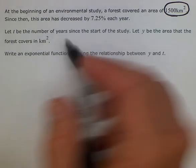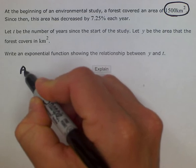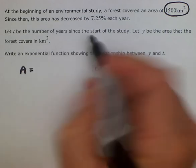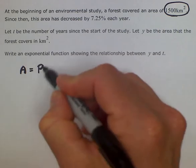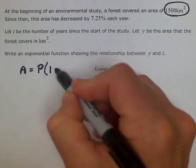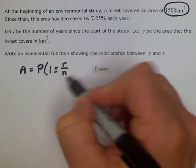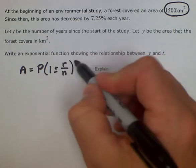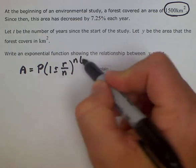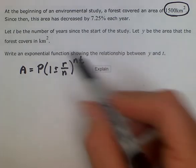So we will use the compound interest formula which looks like this. Amount is equal to our initial principal or our starting point times 1 plus or minus the rate over the number of times it's compounded, all raised to the number of times it's compounded and the number of years.